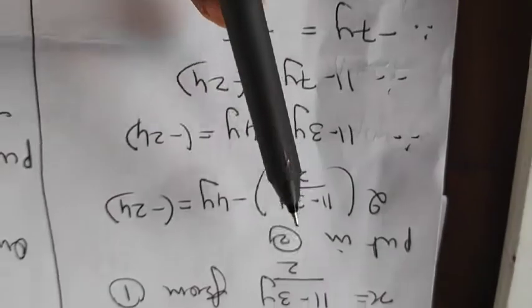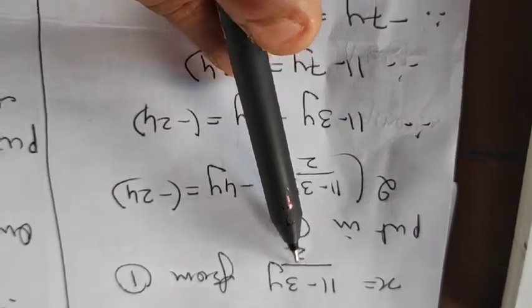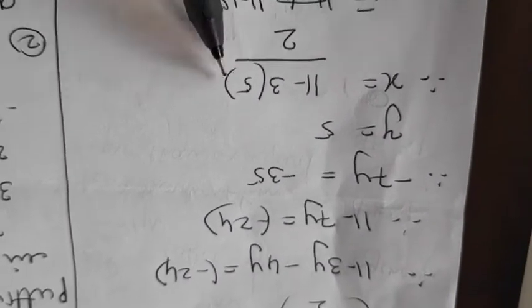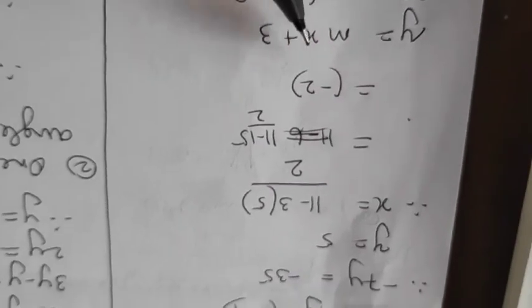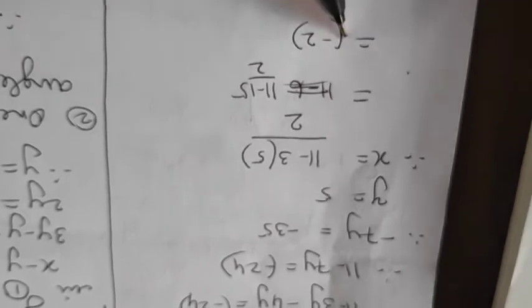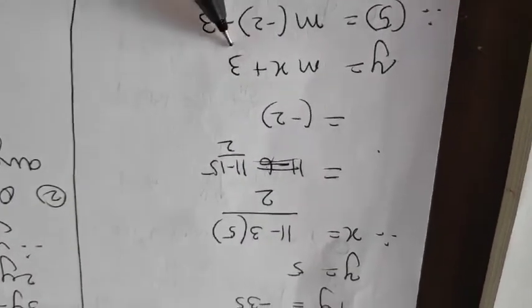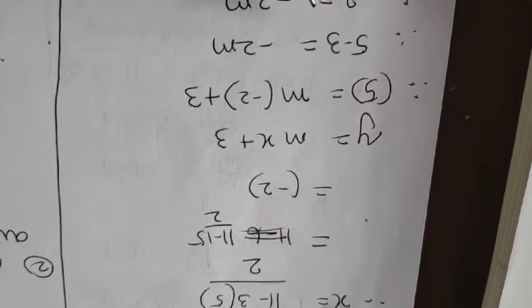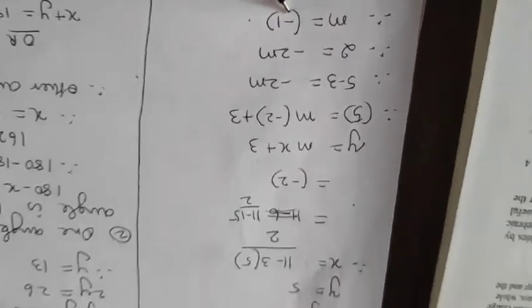Now this value I had to put it in the equation for finding value of x. So x is equal to 11 minus 3y upon 2 was the value which you had taken from the first one. In that I am putting the value of y 5. And if I solve it further I will get minus 2. So x value minus 2, y value 5. Now I have to put it where y is equal to mx plus 3. So if you substitute the values of y and x, you will get the value of m finally minus 1. So got the complete sum.